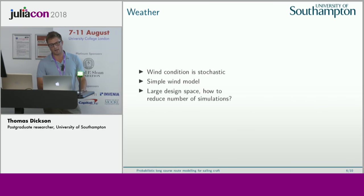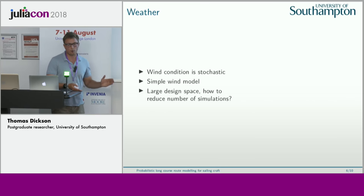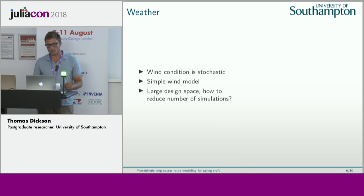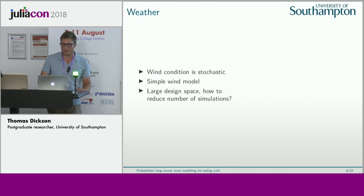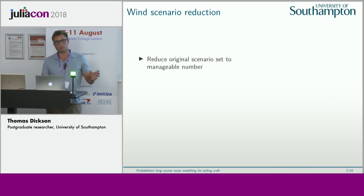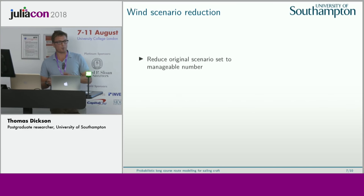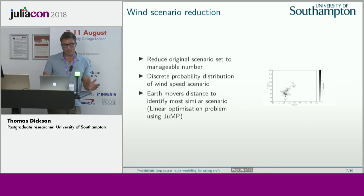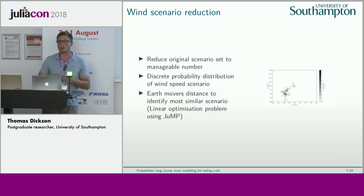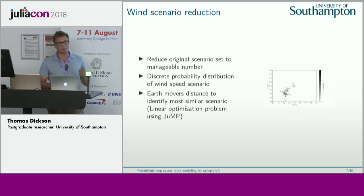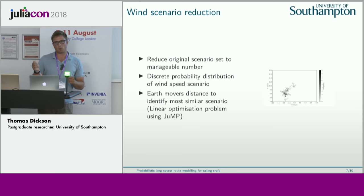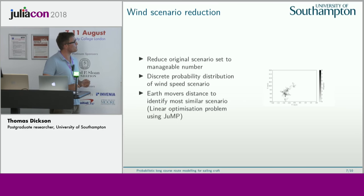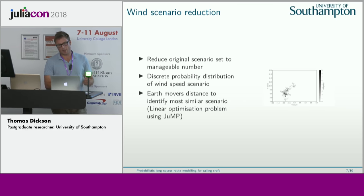Now I have a problem: I've got a really expensive cost function that I can't parallelize easily, and I need to simulate a whole range of stochastic reliability and performance conditions, plus all these weather scenarios. So the question is how to reduce the number of simulations. By discretizing the wind speed scenarios, I can use the Earth Mover's Distance to identify the most similar scenario in the set and remove it — you don't need to simulate a scenario that's already very similar to another. I formulated this as a linear optimization problem using JuMP.